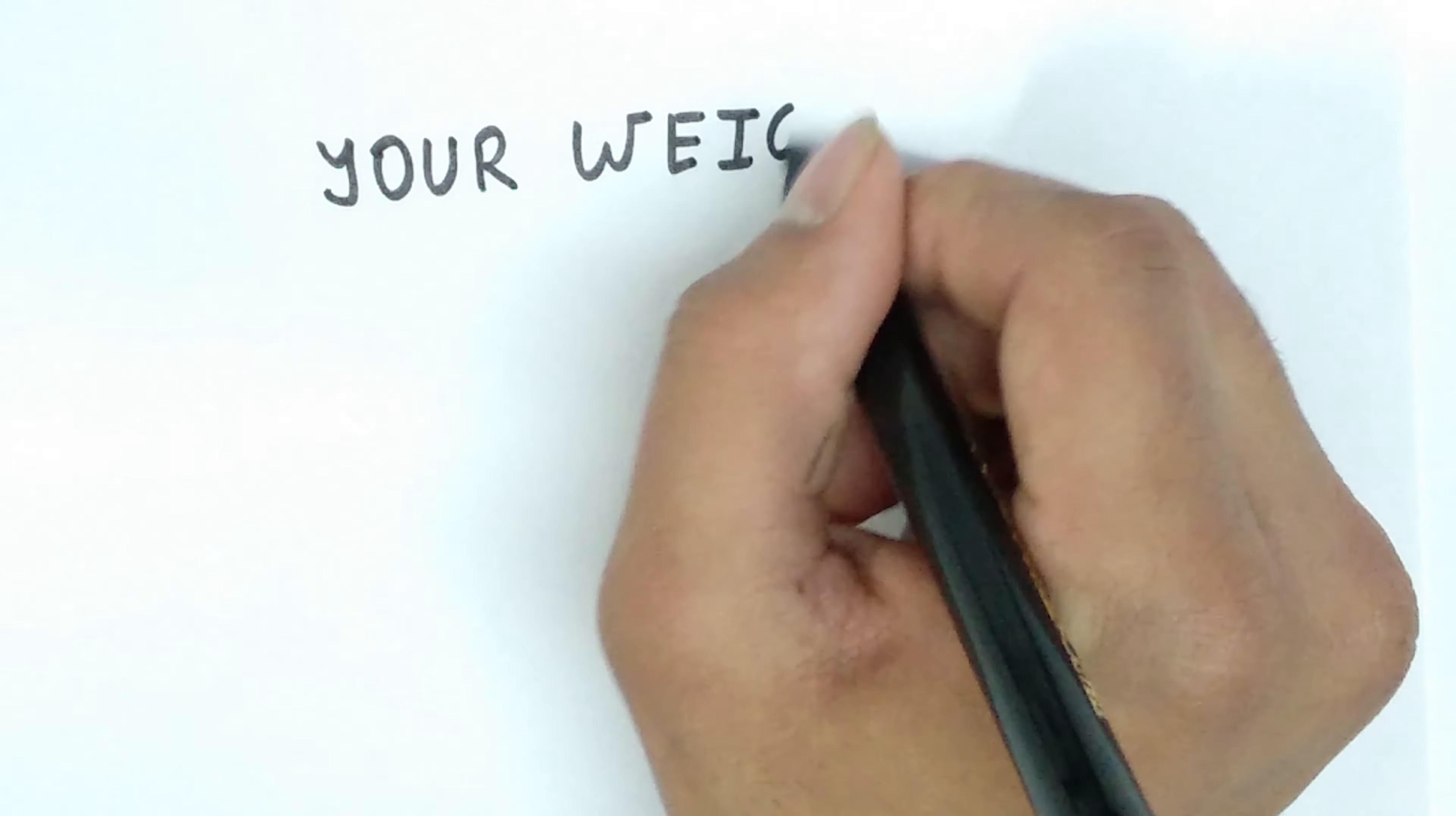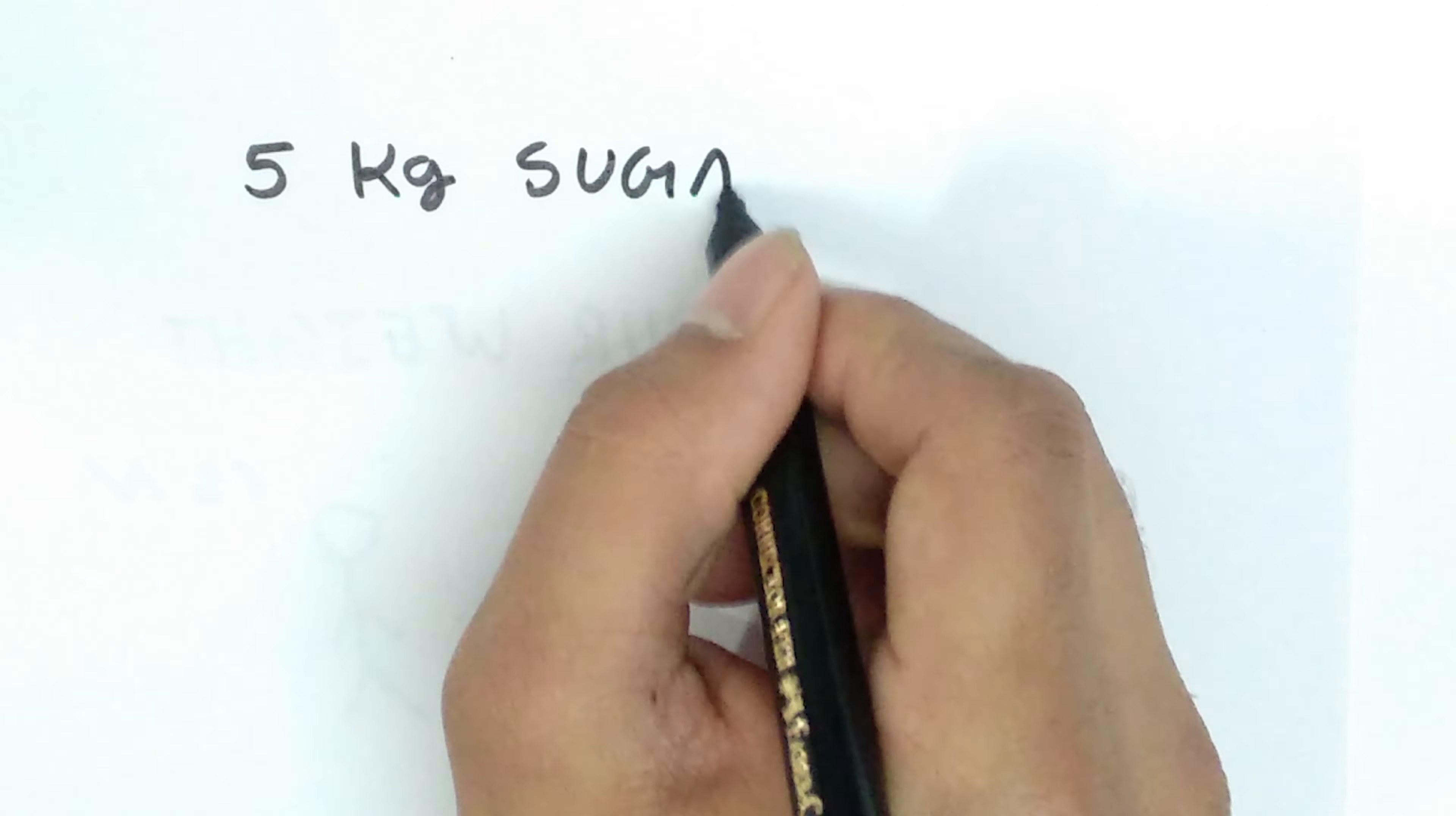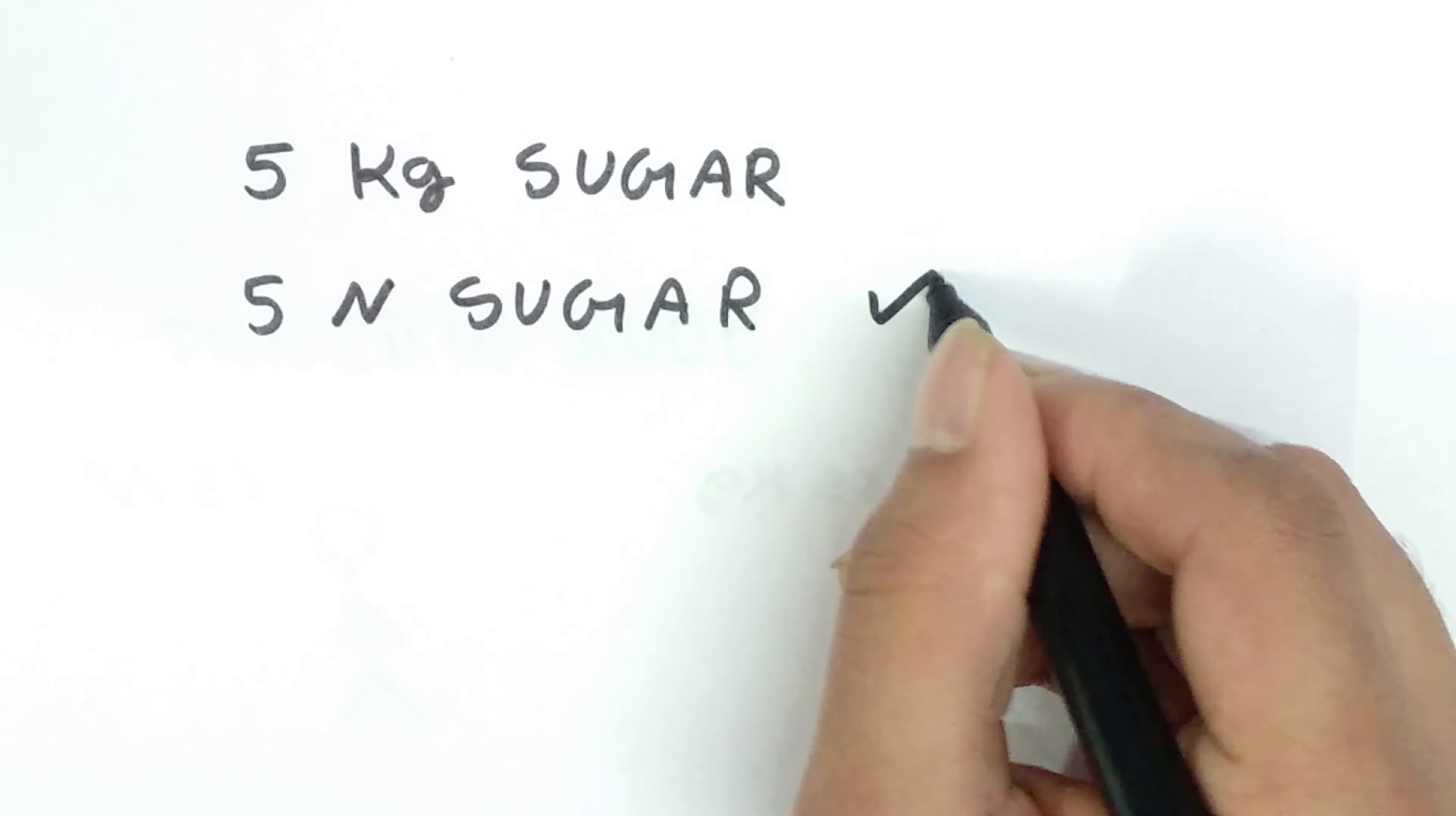So, now what is your weight? 65 kg or 65 newton? What will you ask the shopkeeper? You want 5 kg of sugar or 5 newtons of sugar? It should be Newton.